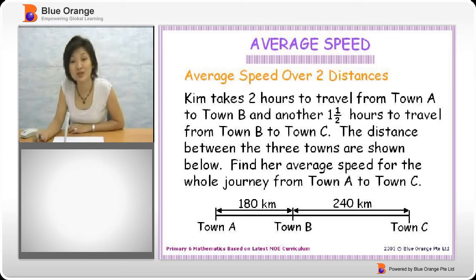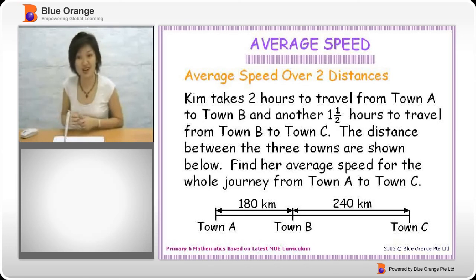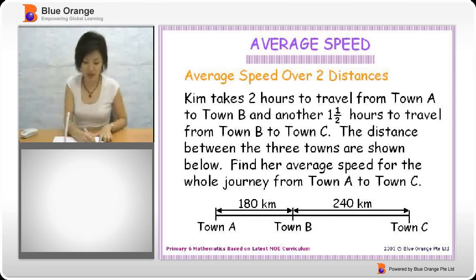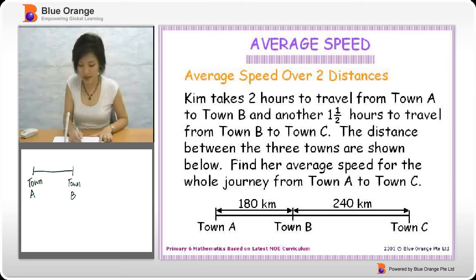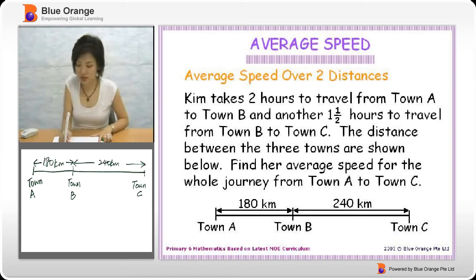When I'm doing speed questions, I usually like to draw in my distance line or you can call it a timeline. So I will have town A followed by town B and then town C, exactly the way they've shown it to us. On top, I'm going to put in my distance, which is 180 kilometers from A to B and 240 kilometers from B to C.